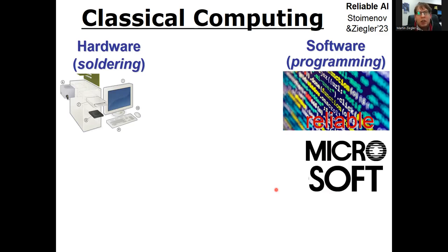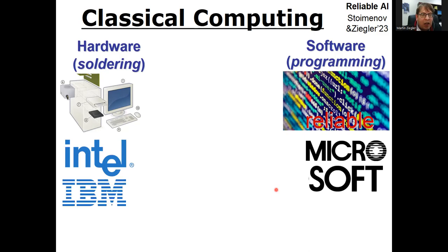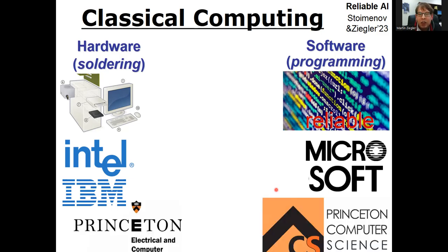These two antipodes are reflected by commercial companies like Microsoft on the one side, and Intel or IBM on the other. They are also reflected by university departments, such as computer science departments as opposed to electrical engineering departments. So in classical computing, we really have these two antipodes.